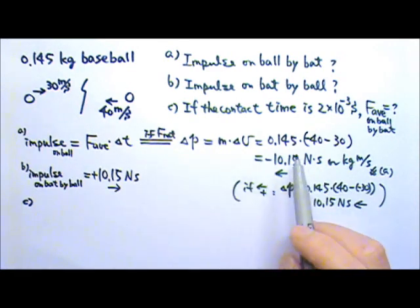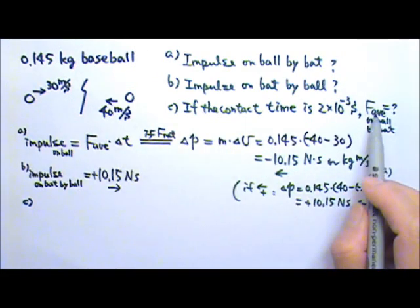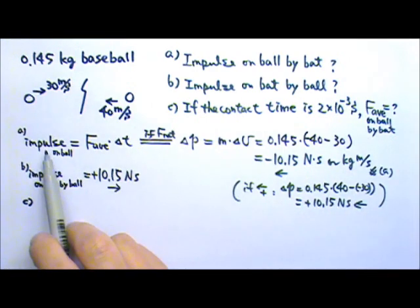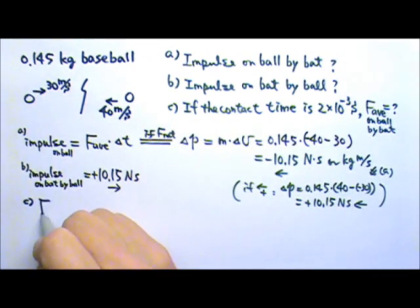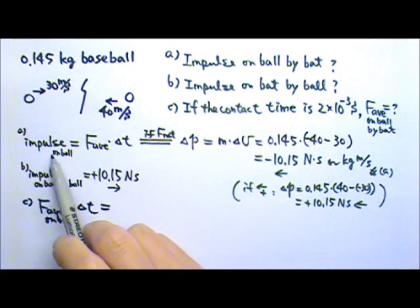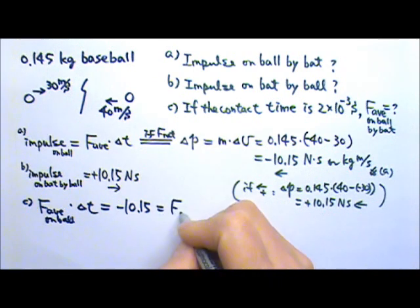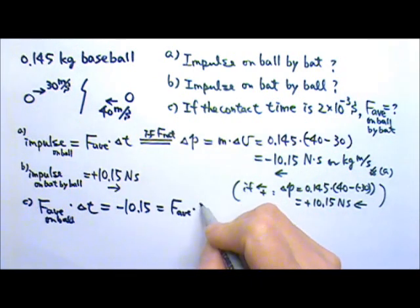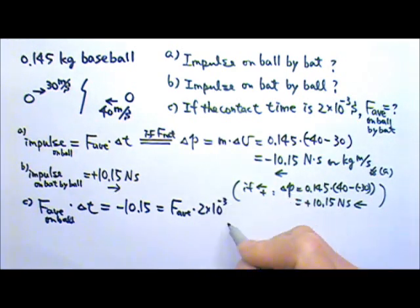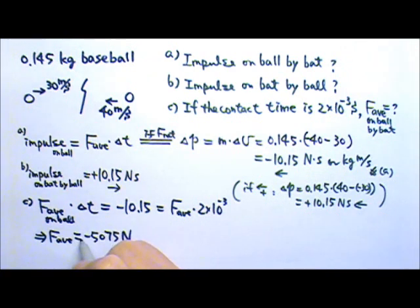For part C, we're given the contact time and have to find the average force. We want the average force on the ball by the bat, so we use the impulse on the ball. The average force on the ball times time equals the impulse on the ball, which is −10.15. So the average force times 2 × 10⁻³ seconds gives us an average force of −5075 newtons. This negative means it's to the left.